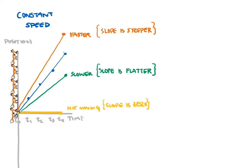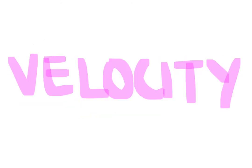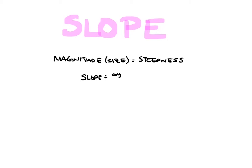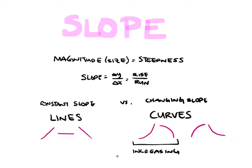These descriptions of steepness are all descriptions of slope, and these descriptions of slope on a position-time graph indicate the object's velocity. When we describe the magnitude or size of slope, we are describing the steepness. We can always determine the magnitude of slope by calculating the change in y value between two points divided by the change in x values between those same two points — rise over run. That magnitude can remain constant, in which case our graph appears as a line. If the magnitude changes, our graph appears as a curve. A curve that gets steeper indicates the magnitude of slope increasing, and a curve that gets flatter indicates the magnitude of the slope decreasing.